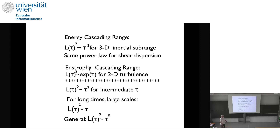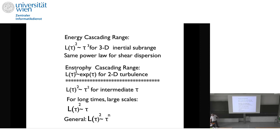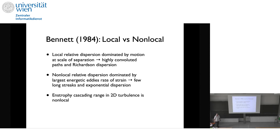In a two-dimensional turbulence regime you can show that l² is exponential. In general it's going to be some τ^n power, usually τ² for intermediate τ and order τ for long time scales — because for long time scales it looks like absolute dispersion. One game we play is calculating what n is, or the functional form — is it 2D or 3D? Binnig's work also talked about local versus non-local effects: local relative dispersion is dominated by motion at the scales of separation with highly convoluted paths and Richardson dispersion, while non-local dispersion is set by large-scale energetic eddies causing exponential dispersion, more like a 2D turbulence situation.